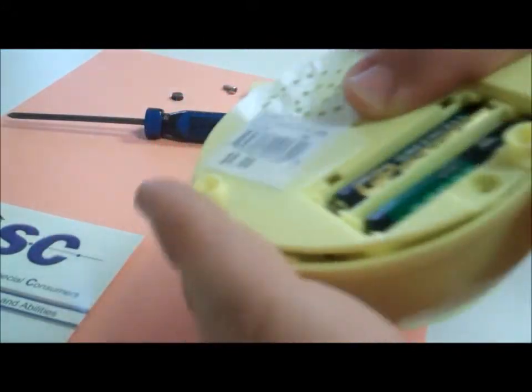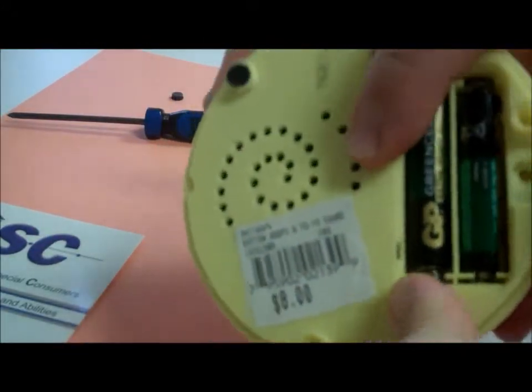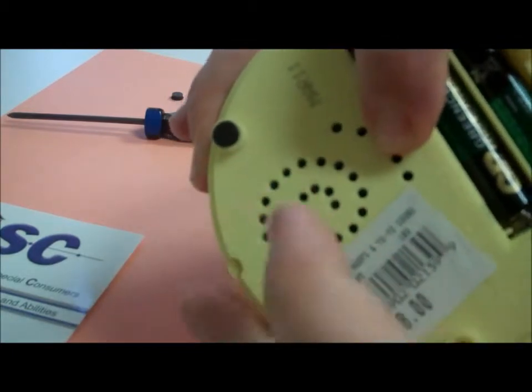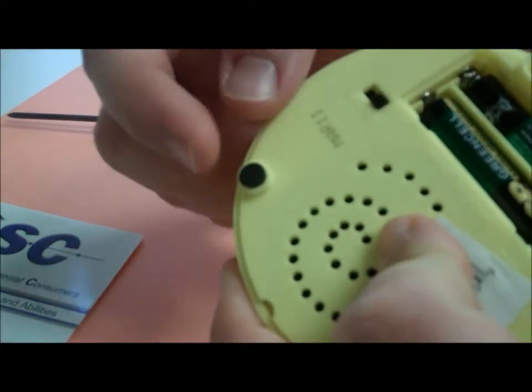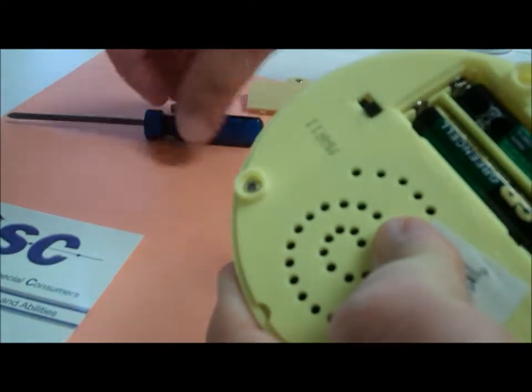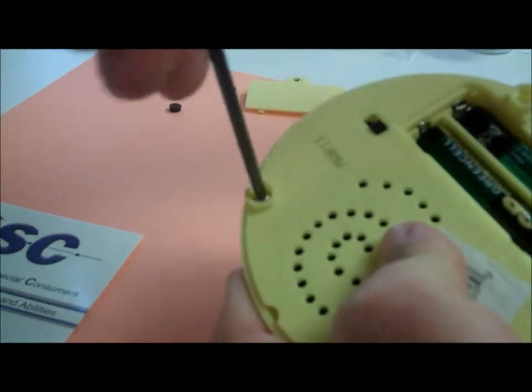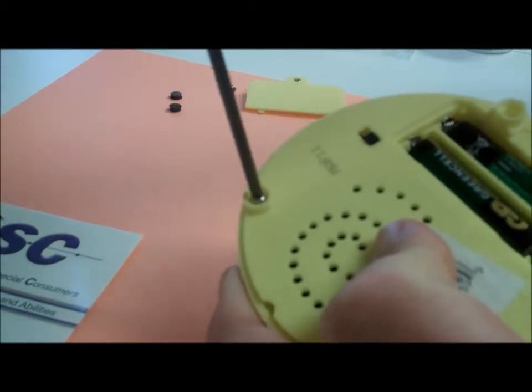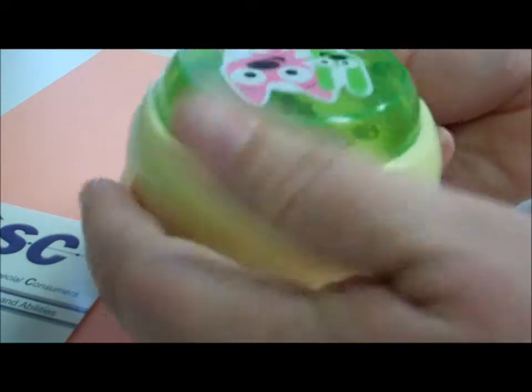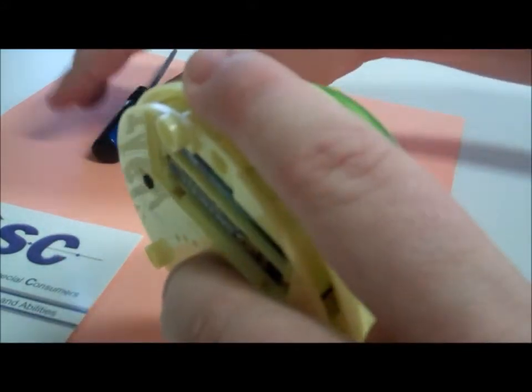So first I went ahead and started to remove the screws from the bottom. And here's a little trick. You may not have known, but the screws are actually hidden beyond this little rubber stopper. So I'll just go ahead and take that out. And I'll remove my last switch screw. But I'll remove the other two.